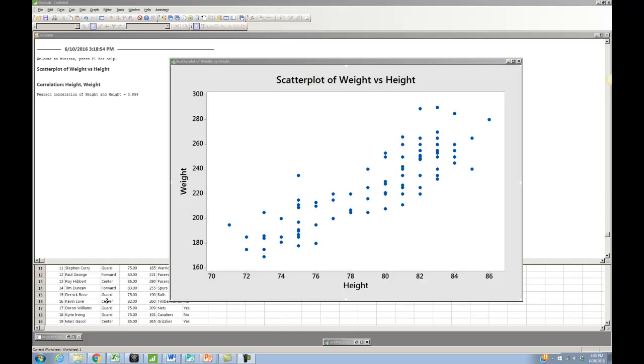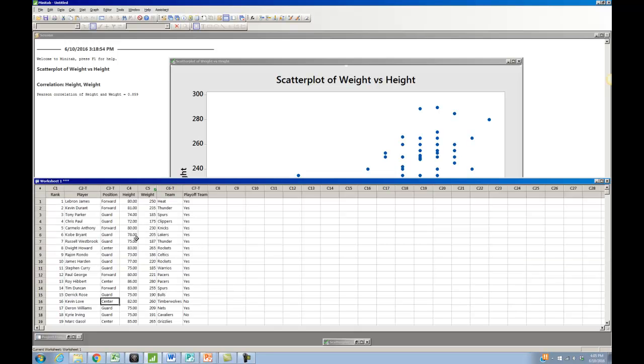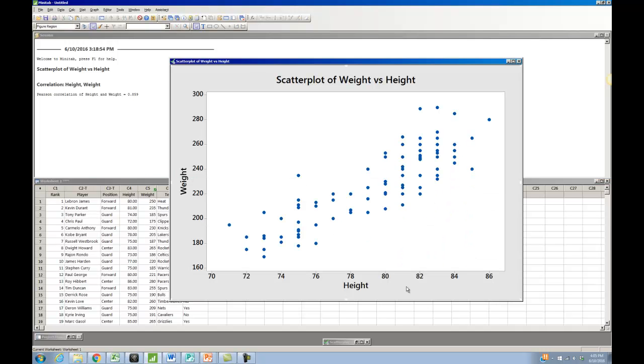So as a reminder, the data set that we're looking at is the top 100 NBA basketball players from 2013. And what we're looking at for those players is their height and their weight. Looking at the scatter plot that we created in a previous video, we could see that the relationship between height and weight was linear, positive, and moderately strong. And this was backed up by a correlation that we calculated. We found an R of 0.859.